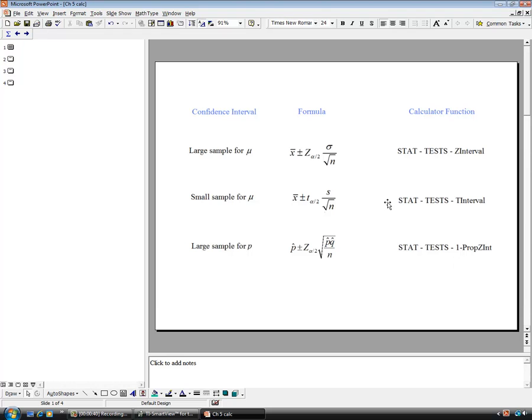So these are the calculator functions. For all of them we hit the stat key, arrow over to tests, and then find the proper function that we're going to need. They're all labeled pretty well. Small sample for the mean mu, when we have 29 or fewer data points, we're going to use the t interval because we're using the t distribution.